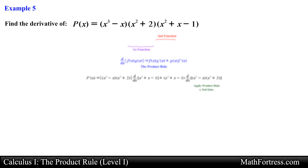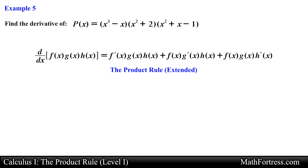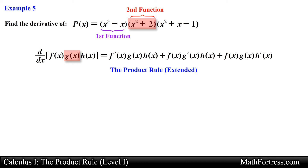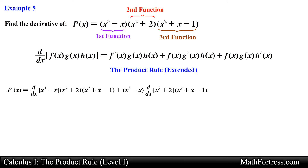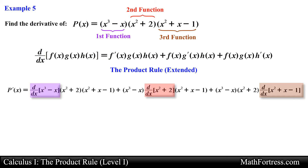We can also find the derivative by using the product rule extended for more than two functions. In this case we would need to assign three functions as our f of x, g of x, and h of x. For this problem we will assign f of x to be the first binomial, g of x the second binomial, and the trinomial as our h of x. Then it is just a matter of writing all the functions making sure that we alternate the derivative to each distinct function.